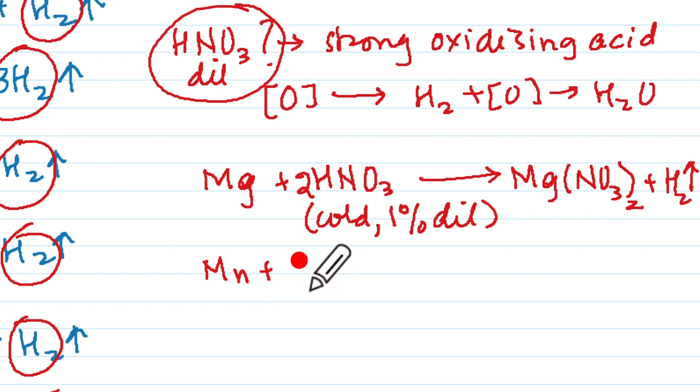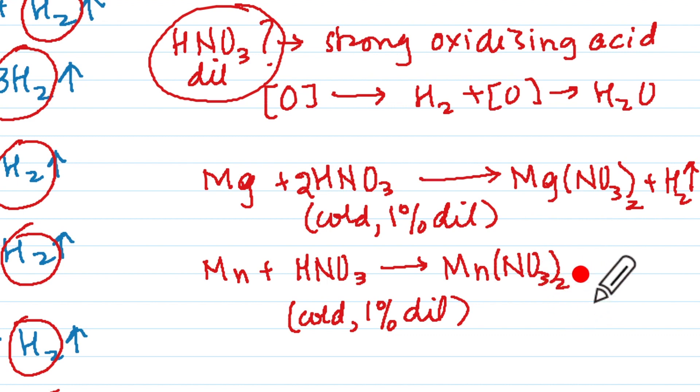Same thing for Mn. Mn also will take HNO3 but the same condition, it should be cold with 1% dilute HNO3. Mn will combine with NO3, it will form Mn(NO3)2 and plus it will liberate H2. So NO3 there are two of them so we will write here 2, so hydrogen also is balanced 2H and 2H and here NO3 also are twice so we have this reaction balanced. So remember with HNO3 only with Mg and Mn you can obtain hydrogen but not with aluminum, not with zinc.